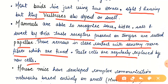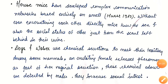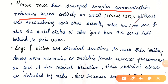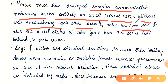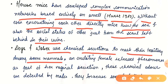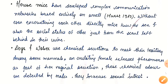House mice have developed complex communication networks based entirely on smell — Hearst, 1989. Without even encountering each other directly, mice know the sex and social status of others just from the scent left behind in their urine. Dogs and wolves use chemical secretions to mark their territory. Among some animals, ovulating females release pheromones as part of their vaginal secretion; these chemical odors are detected by males and increase sexual interest.